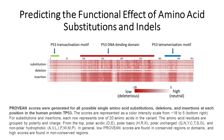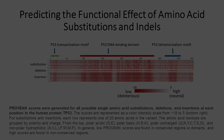In general, low PRUVIAN scores are found in conserved regions or domains, and high scores are found in non-conserved regions. Overall, PRUVIAN is a fast computational software tool that can predict whether an amino acid substitution or indel has an impact on the biological function of a protein.